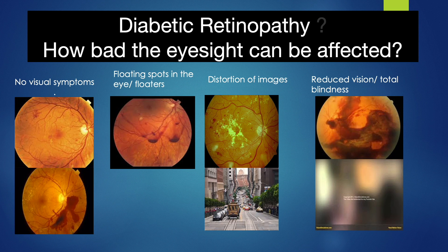What will the patient experience in terms of eyesight? Symptoms can range from no visual symptom at all, which can happen even in the advanced form of the disease. This is the reason why regular screening is important. Occasionally, if there is bleeding, the patient will experience seeing floaters, defined as seeing moving particles in front of the eye which move with every eye movement.